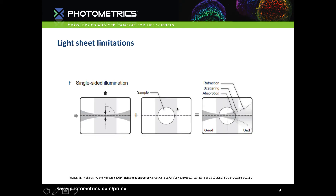Lightsheet microscopy is not without its limitations. With single-sided illumination, as the lightsheet enters the sample you get refraction, scattering and absorption of light, meaning the image would look really nice on the left-hand side but on the right-hand side the beam has already started diverging, reducing image quality.